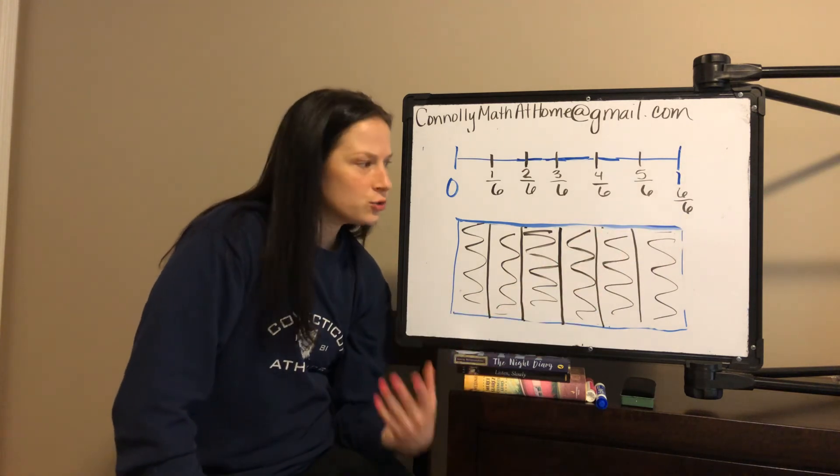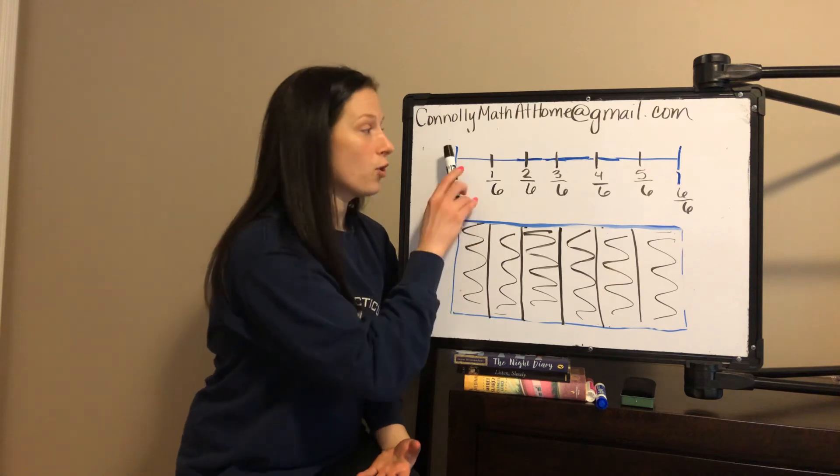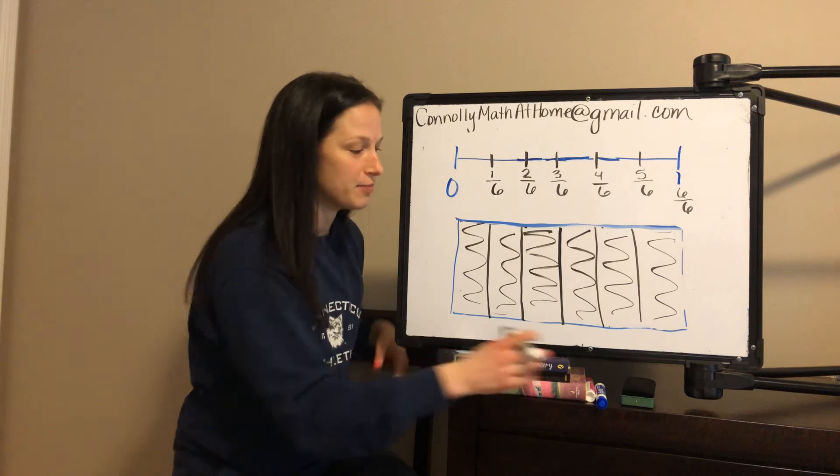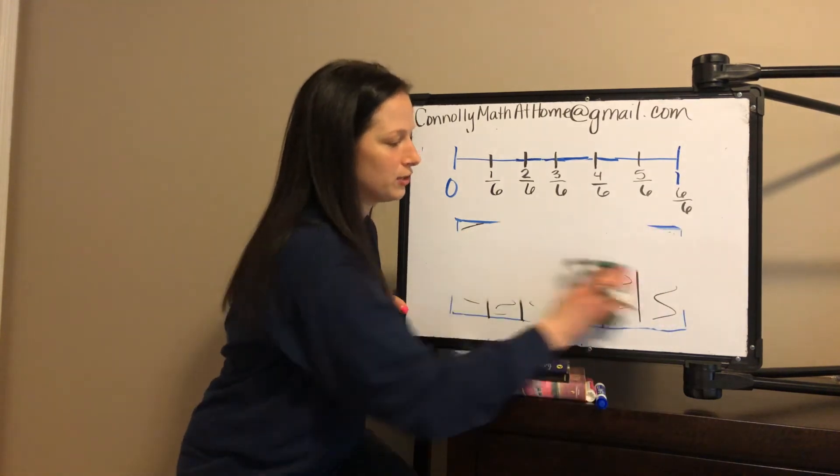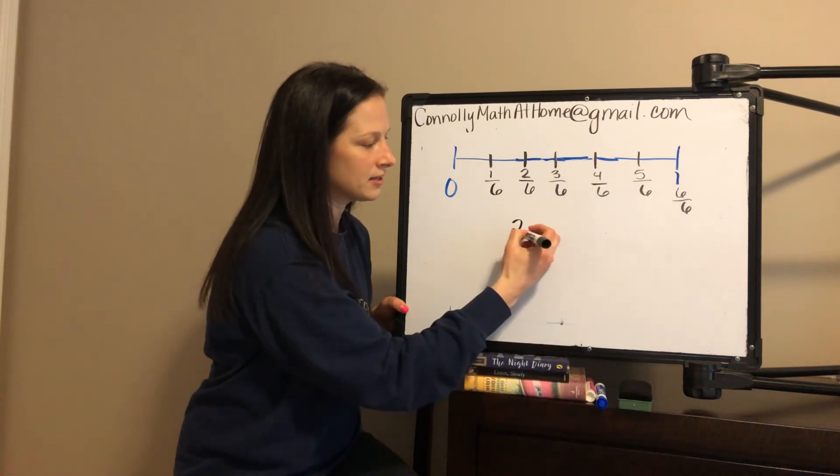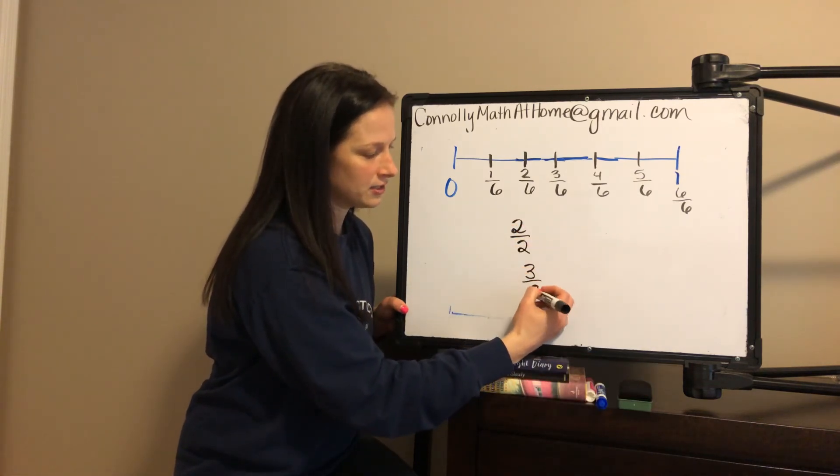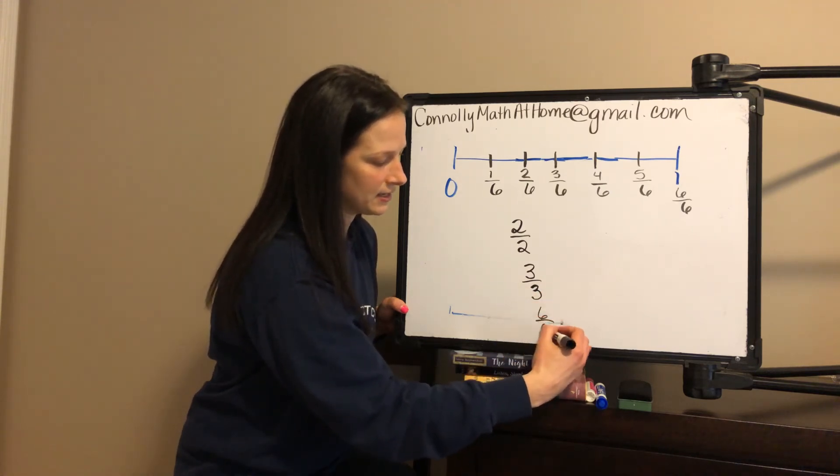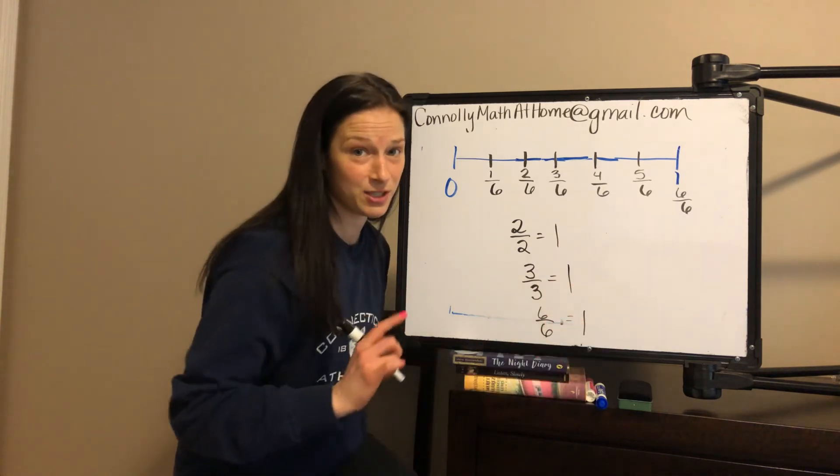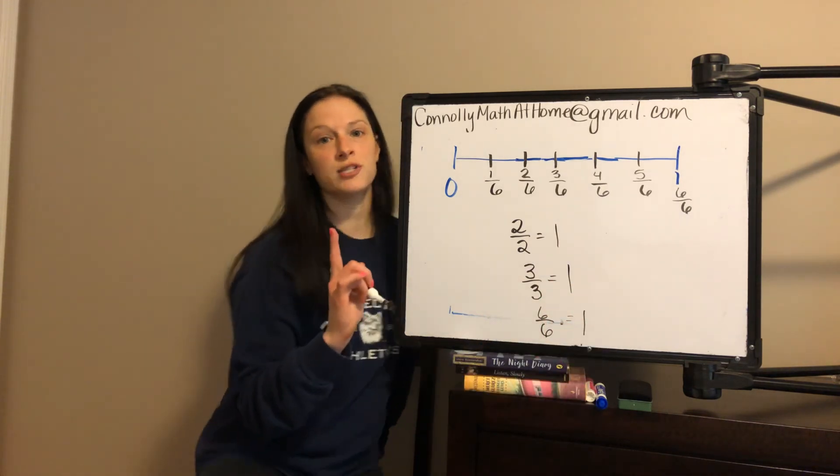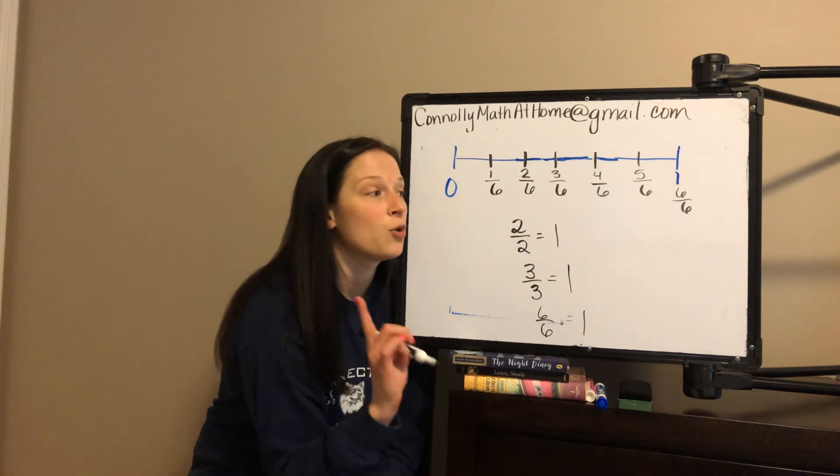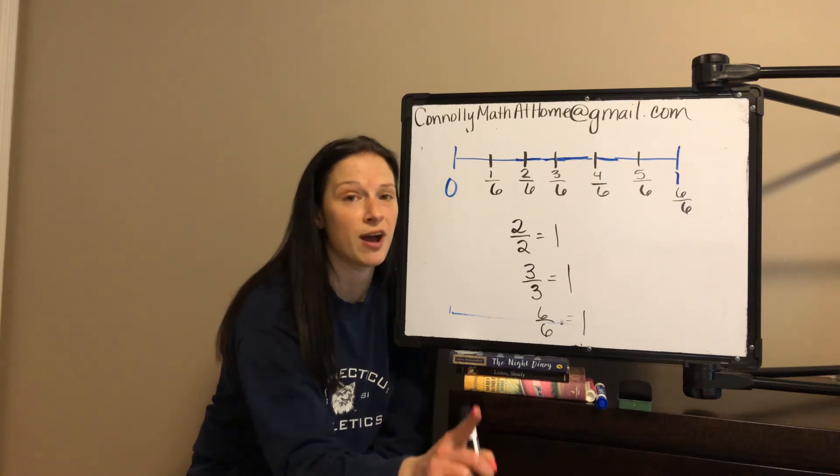Let's talk about what do you notice when the whole thing is shaded in or if I have walked one whole mile. What happened with the numerator and the denominator? I'm going to show you what you have seen so far. You saw two halves. You saw three thirds. And you saw six sixths. And all of these, I'm putting the equal sign right there because they're the same as the number one. All of those are the same as the number one.